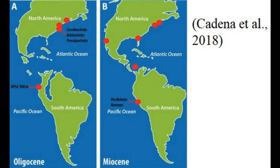During this period, North and South America would have still been divided, which would have prevented a lot of mixing of fauna and flora between the two continents. Between the Oligocene and the Miocene, the bridge between North and South America was starting to appear, leading to increased colonisation and mixing between different taxa on both sides. This is probably why we see Loricariidae in South America but not so much in North America.